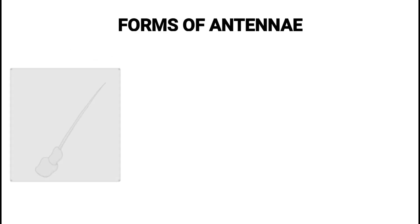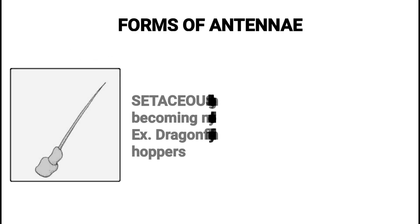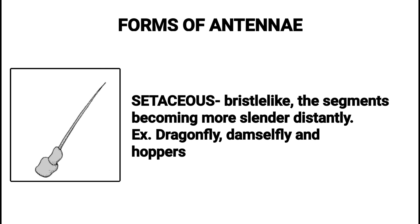Forms of Antennae. Setaceous — bristle-like, the segments becoming more slender distally. Examples: Dragonfly, Damselfly, and Hoppers.